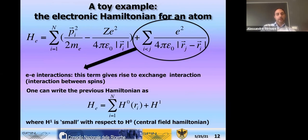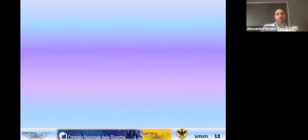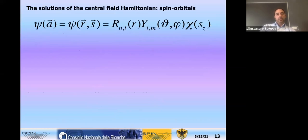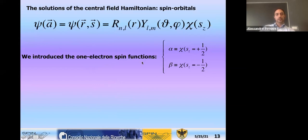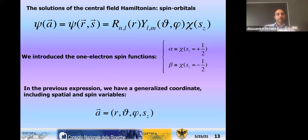We write this electronic Hamiltonian for an atom: we have the kinetic part, the electron-nucleus interaction, and the electron-electron interaction. This electron-electron interaction is the source of the interaction between spins, even if there is no spin-dependent term explicitly. We split into a sum of single-particle Hamiltonians using a central field approximation, with the remaining part H1.